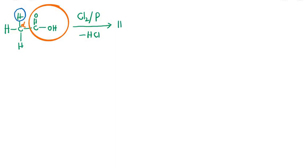After the first substitution, the alpha carbon has one halogen atom — the product is called alpha-chloroacetic acid, with one Cl on the alpha carbon and the remaining carboxyl group (C=O, OH) intact.